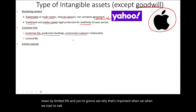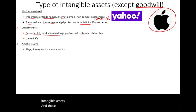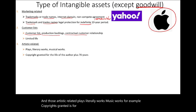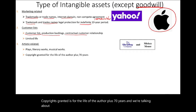A third type is artistic-related intangibles, like plays, literary works, and music works. For example, copyrights are granted for the life of the author plus 70 years, and we're talking about something like the Walt Disney Company and the Mickey Mouse icon.